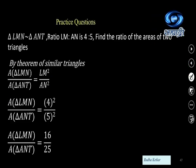Applying the theorem: two triangles are similar and LM is to AN equals 4 is to 5. Find the ratio of their areas. Area of triangle LMN upon area of triangle ANP equals LM square upon AN square equals 4 square upon 5 square equals 16 upon 25.